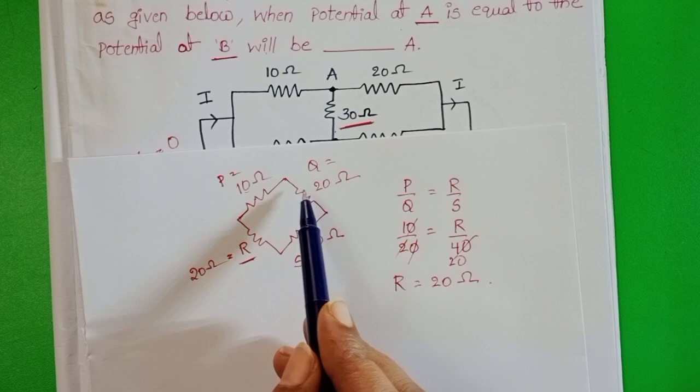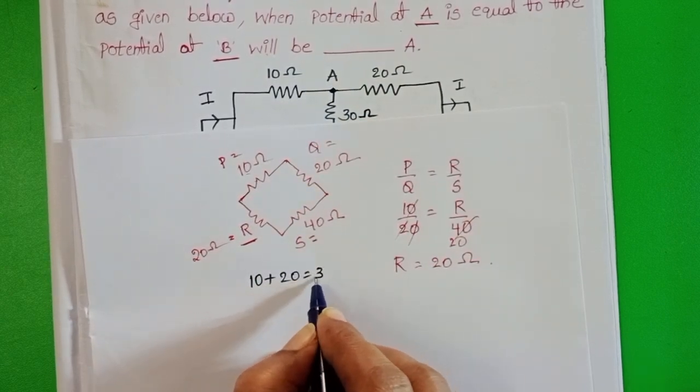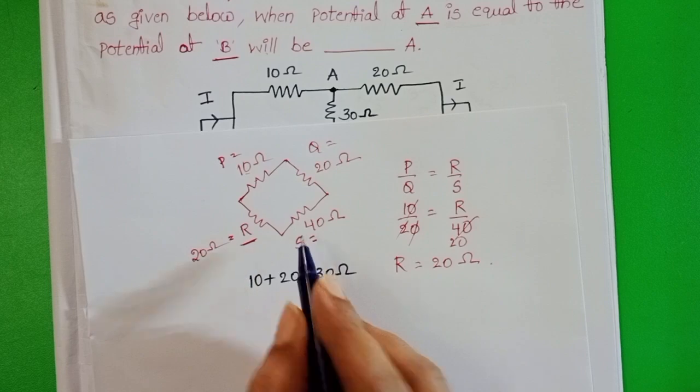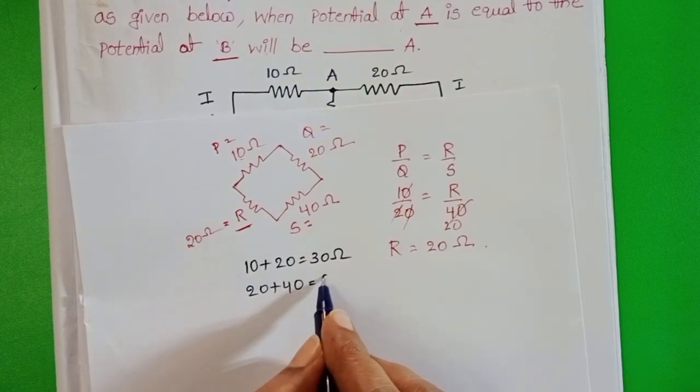These two resistors are connected in series. 10 plus 20 equals 30 ohms. And these two also in series. 20 plus 40 equals 60 ohms.